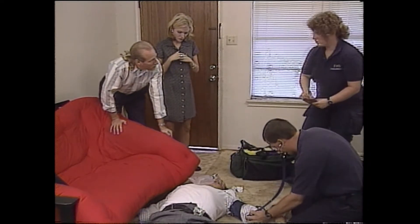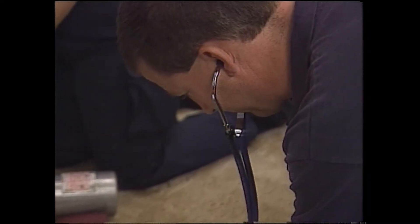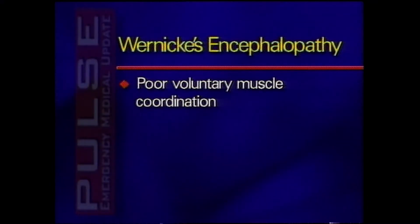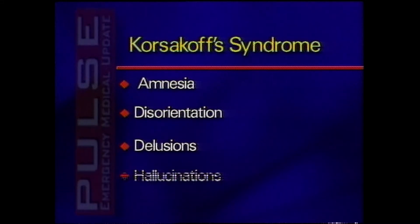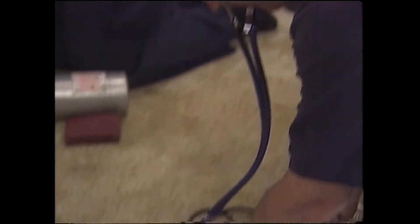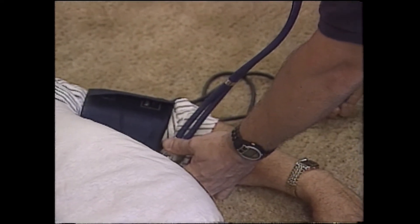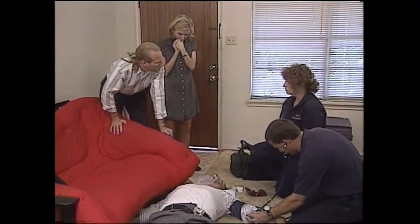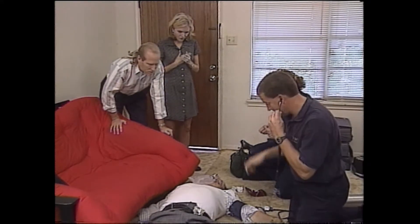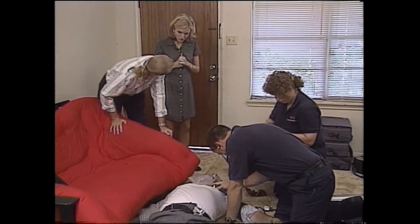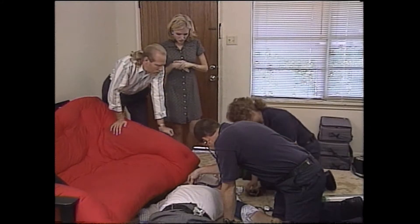Thiamine is used in the treatment of alcohol withdrawal patients to prevent Wernicke's encephalopathy and Korsakoff syndrome. Wernicke's encephalopathy is an acute reversible disorder associated with chronic alcoholism, characterized by poor voluntary muscle coordination, eye muscle weakness, and confusion. Korsakoff syndrome is a result of chronic alcoholism, characterized by amnesia, disorientation, delusions, and hallucinations. Both disorders are related to thiamine deficiency and the brain's inability to utilize glucose properly, and are collectively referred to as Wernicke-Korsakoff syndrome. Pre-hospital administration of thiamine to any patient in suspected alcohol withdrawal prevents complications. The usual dose is 50 to 100 mg IV or IM — refer to local protocols.